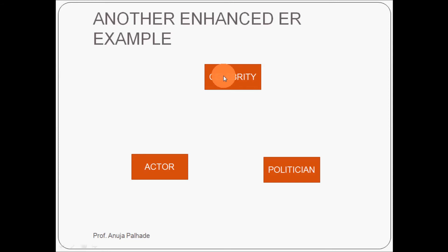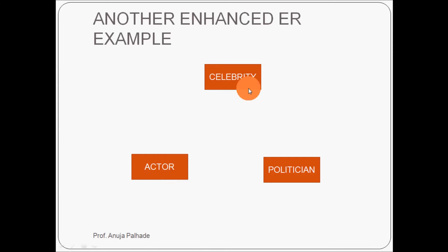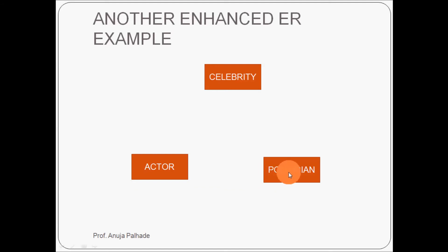Celebrity has its own attributes like celebrity name, celebrity address, and so on. Actor also has some unique attributes — how many movies worked in, likewise. Politician has attributes like how many times he became an MLA, likewise. I am not drawing all these attributes here, but the attributes are present for each entity.